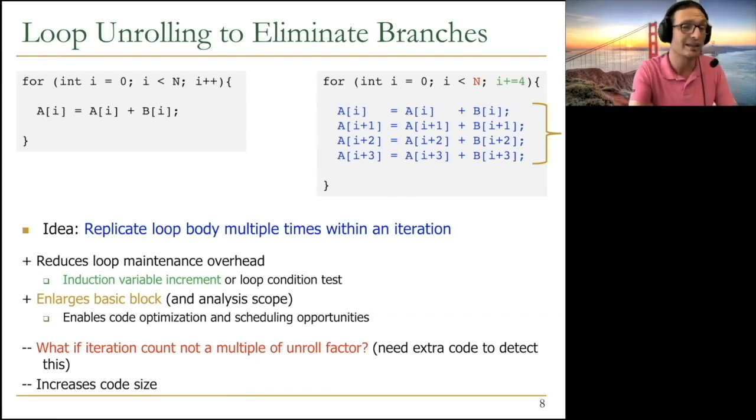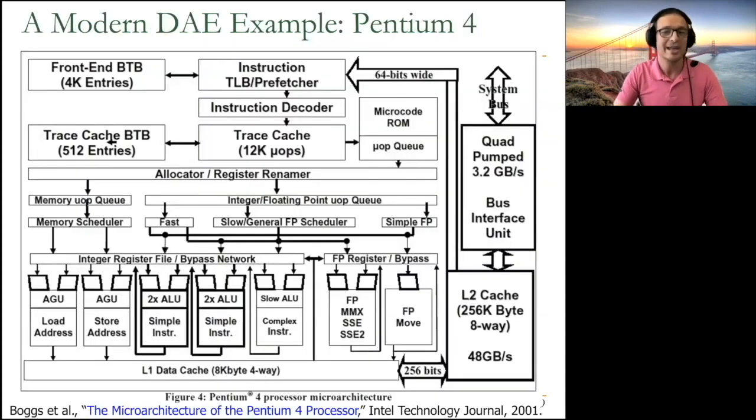And they talk about loop unrolling a lot, actually, decoupled access and execute, and how it improves the performance of this Astronautics ZS-1 processor. But it's important for you to think about it going forward, especially if you're interested in topics like compilation and hardware. This is a very basic compilation mechanism. Let me give you the impact of decoupled access and execute in real processors, and then we will be done.